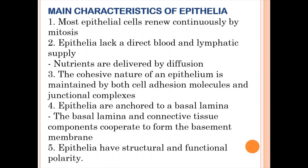Epithelial cells are closely adhered together by tight junctions and cellular junctions. Epithelial tissues are anchored to a basement membrane, also called the basal lamina. Under light microscopy it is viewed as a single basement membrane, but under electron scanning microscopy it shows two layers.